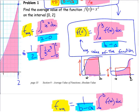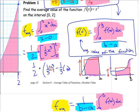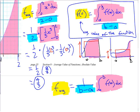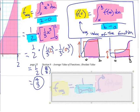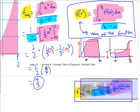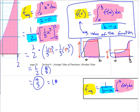That gives one-half times one-third times two cubed minus zero cubed — which is one-half times eight-thirds, which equals four-thirds. Is that reasonable? Let's check. Four-thirds is approximately 1.33, which is right in the range we expected.